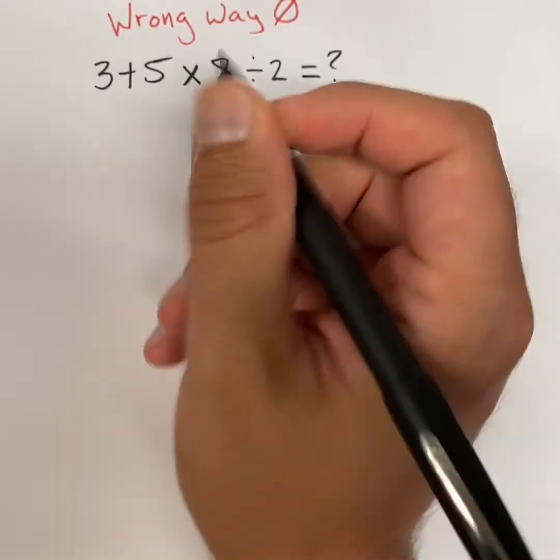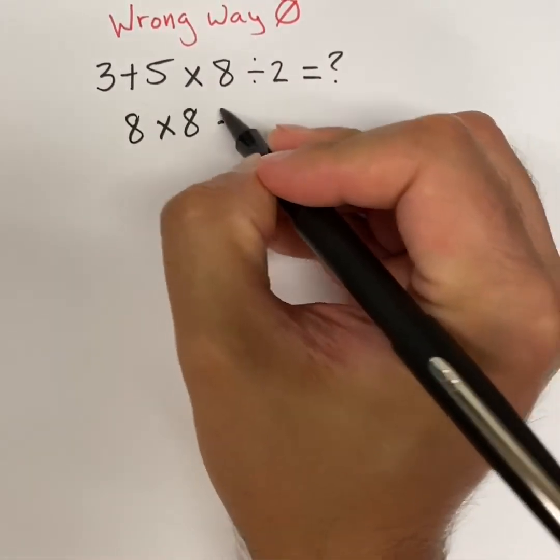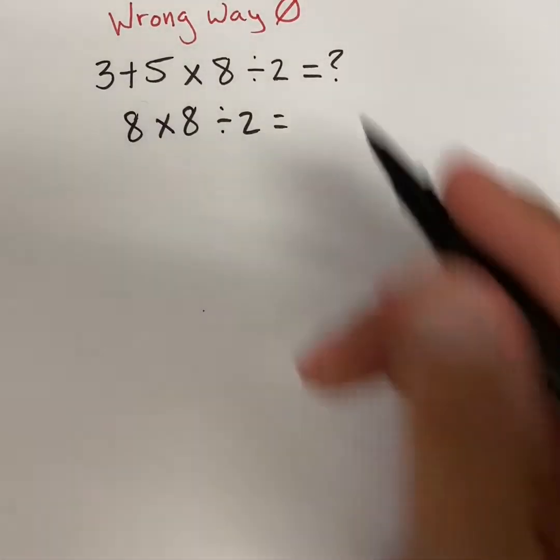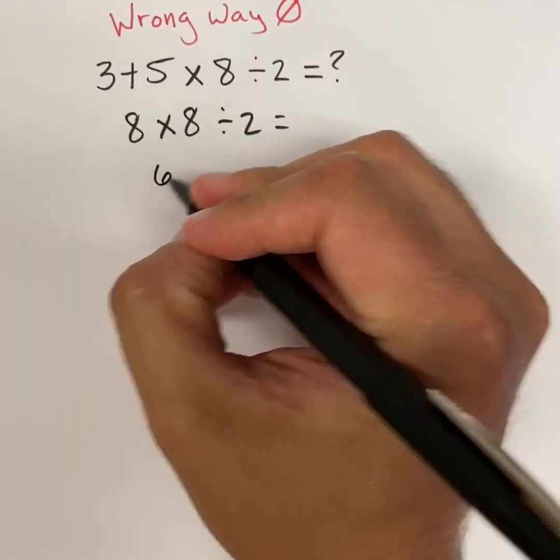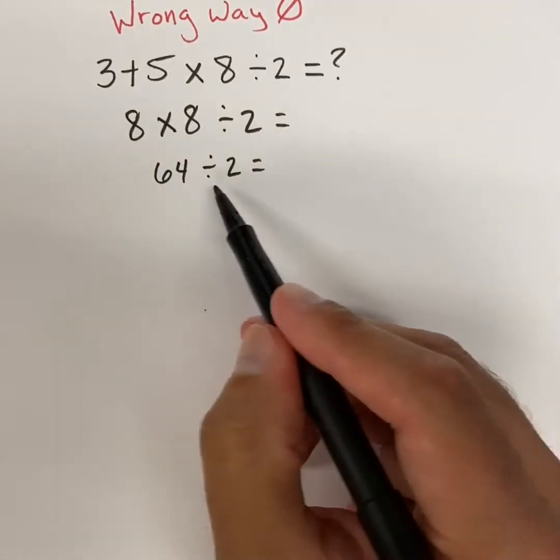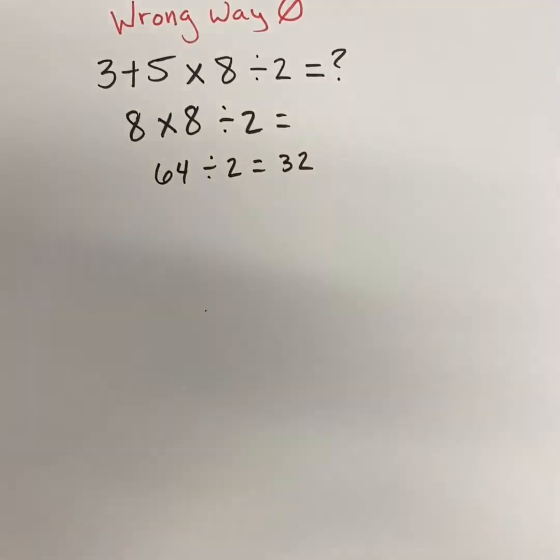So if we were to do that, we would do 3 plus 5 first, which is 8. 8 times 8 divided by 2. And then we would move to the next line. Well, 8 times 8, that's a double. We should know our doubles. That's 64 divided by 2. And 64 divided by 2 is 32. Guess what? The wrong answer. And we've already discussed that in the beginning of this. We did get an answer, but it's not the correct one.